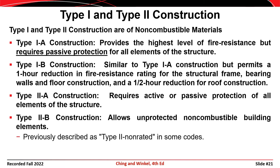As you move from Type 1A to Type 2B, the requirements for fire resistance are reduced, but the susceptibility to fire is increased. Thus, if you look at IBC Table 504.3, you'll see that as you move from Type 1A to Type 2B, the height restrictions on the structure become more significant.